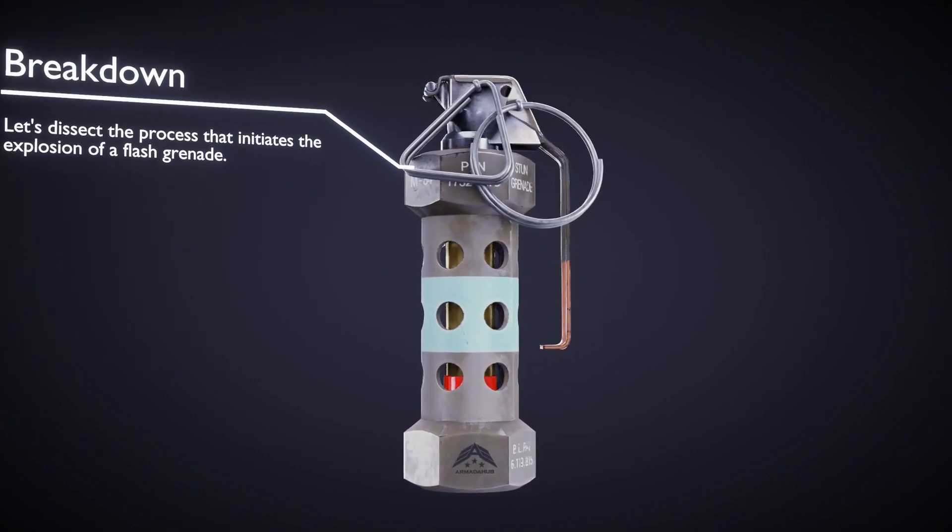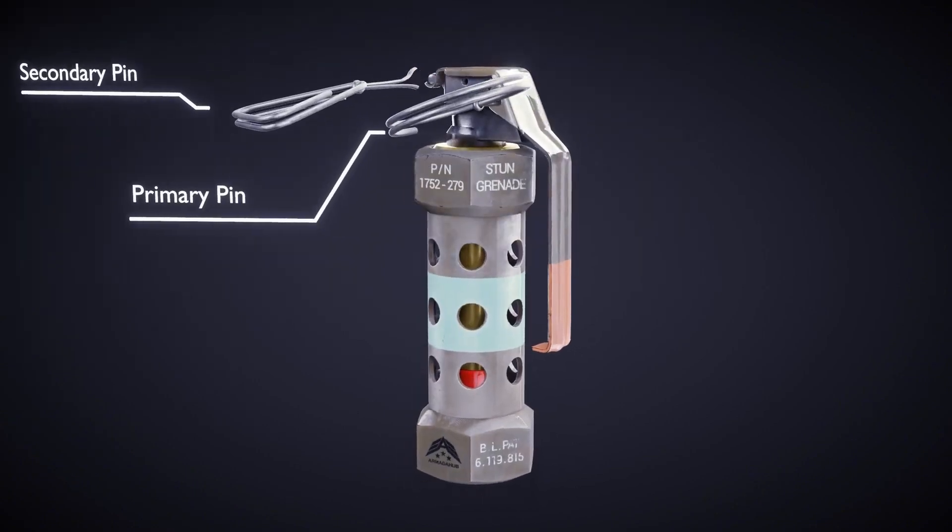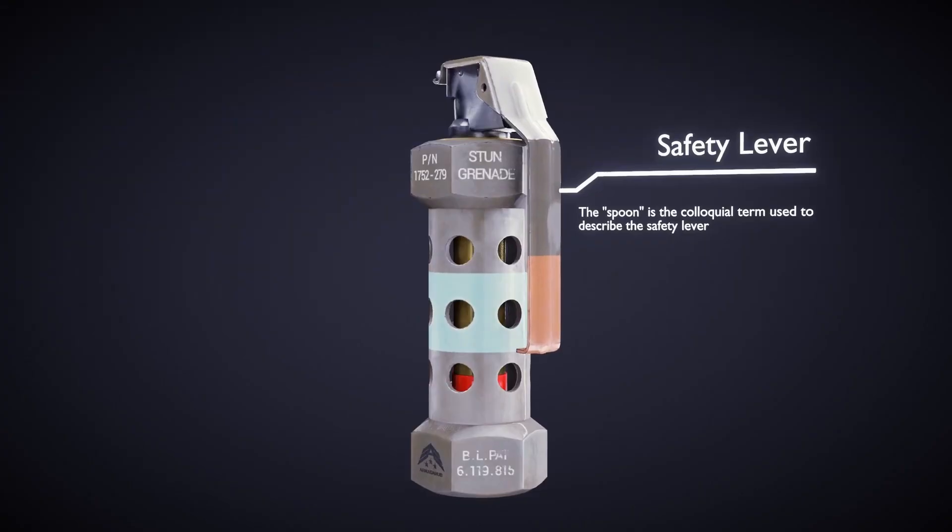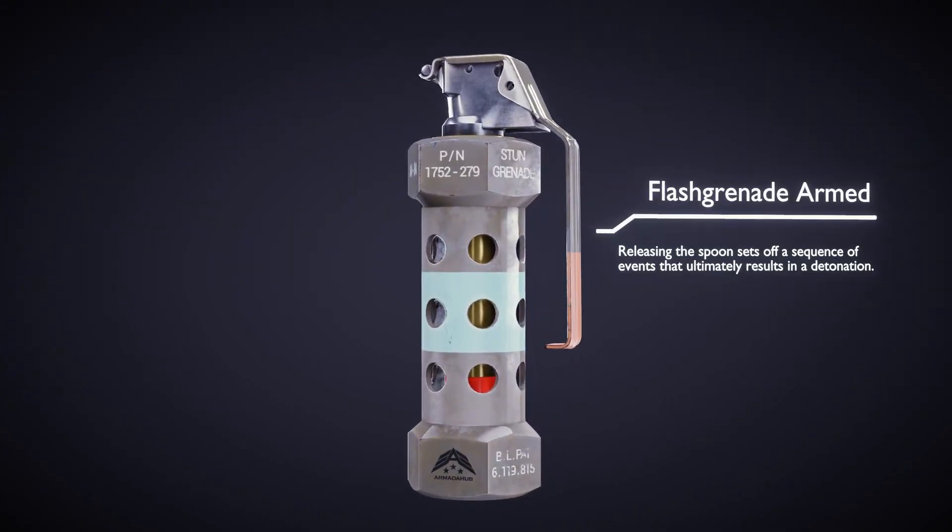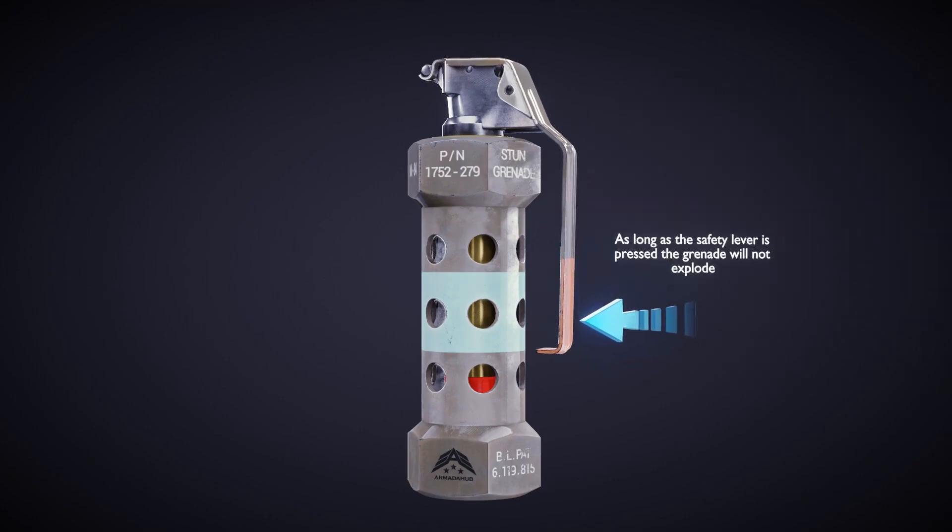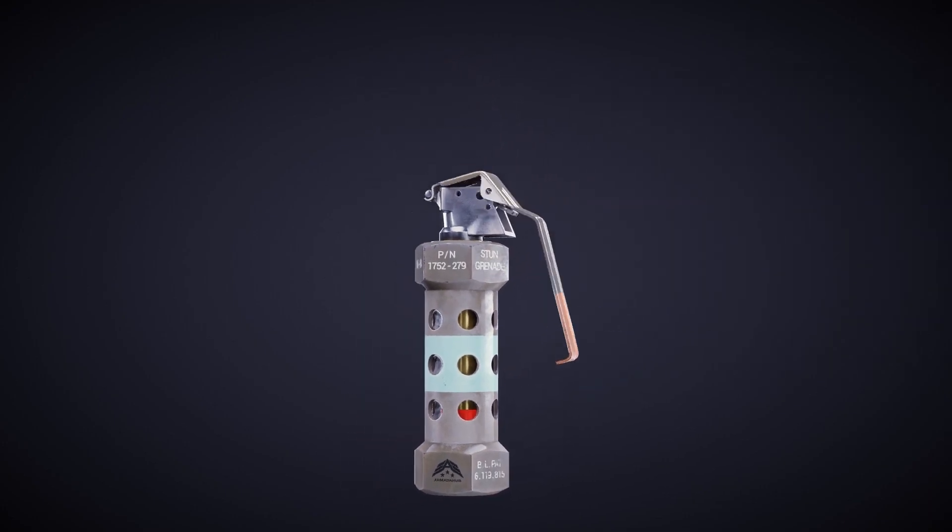The M240 Fuse is the heart of the flash grenade. It is essential for initiating the detonation process and ensuring precise timing. The fuse has a time delay, usually set to approximately 1.5 seconds.